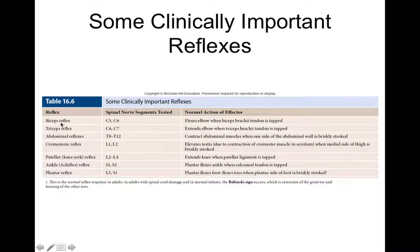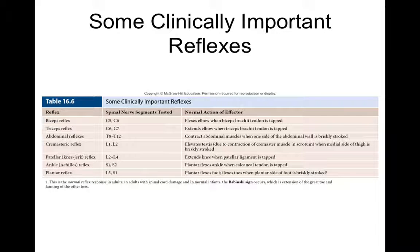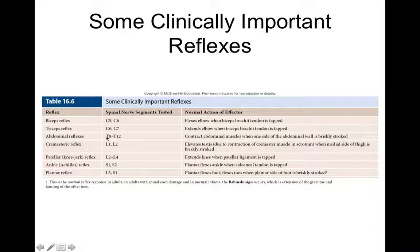Various reflex tests are used throughout the body to determine spinal nerve function: biceps, triceps, abdominal, cremasteric, patellar, ankle, and plantar reflexes. If the biceps reflex is working, it suggests spinal nerves C5 and C6 are intact. The biceps tendon reflex is tested by tapping the biceps tendon in the antecubital area — the arm should flex slightly. The triceps reflex, tested at the triceps tendon near the olecranon process, tests C6 and C7 function and should cause arm extension.